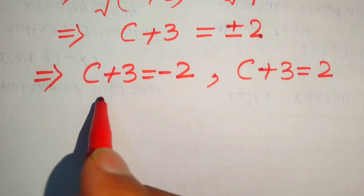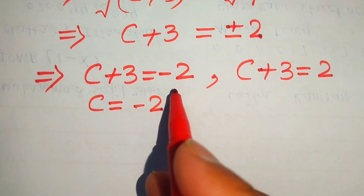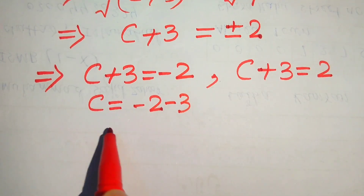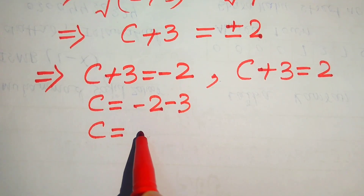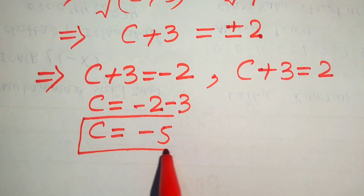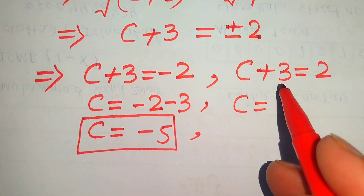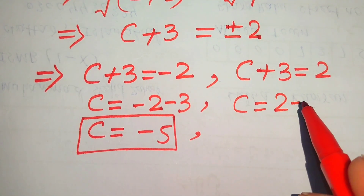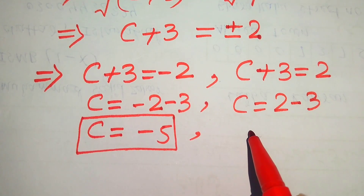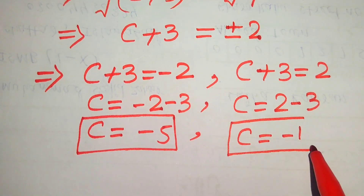From the first case, c + 3 = -2, we move 3 to the right-hand side to get c = -2 - 3 = -5. From the second case, c + 3 = 2, we move 3 to the right-hand side to get c = 2 - 3 = -1. Both methods give the same values of c.